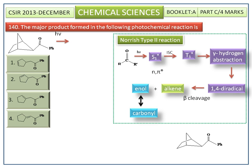Now we consider the given reactant compound. It is subjected to photons, giving the non-bonding π-electron triplet excited state of the carbonyl group. Now we check whether it has a gamma hydrogen or not.